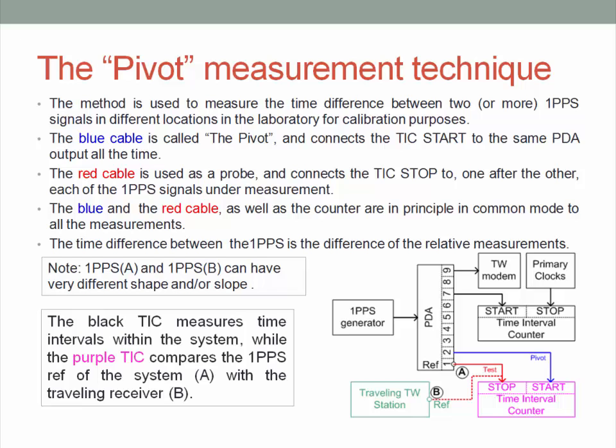Now, we wanted to show what was said at the beginning — measuring the time difference between two 1 PPS signals at two points in your lab. We call this the pivot technique. You have one pivot cable that is always connected somewhere in your lab, and a test cable that you move among the points you want to measure. You take a difference, and that gives you the time difference between the two points. You would think everything from start to finish will be in common mode and cancel out.